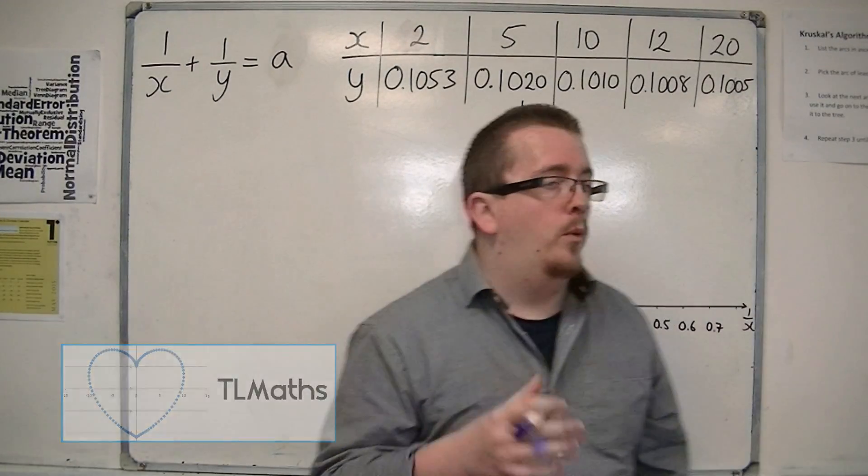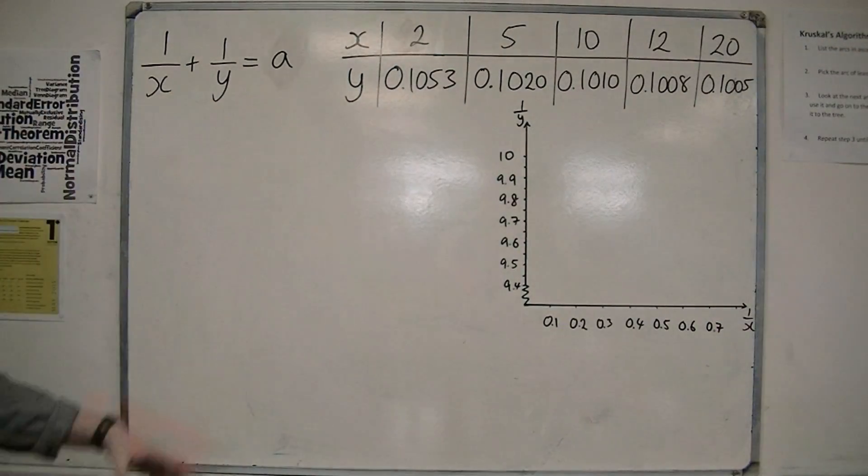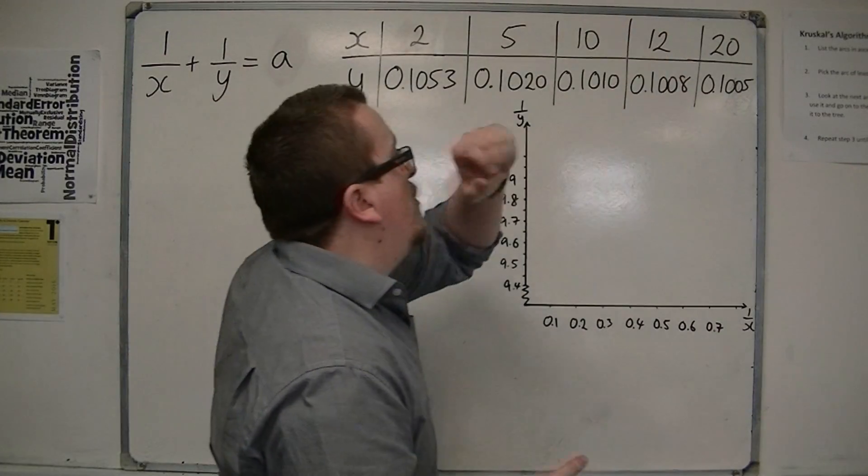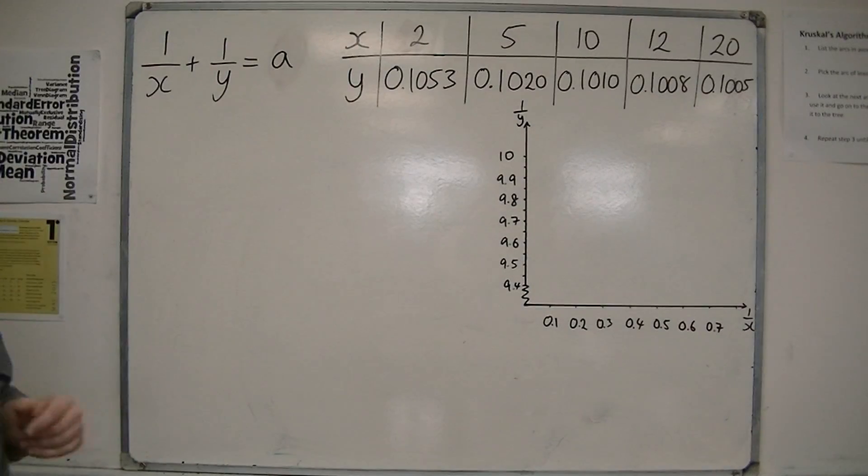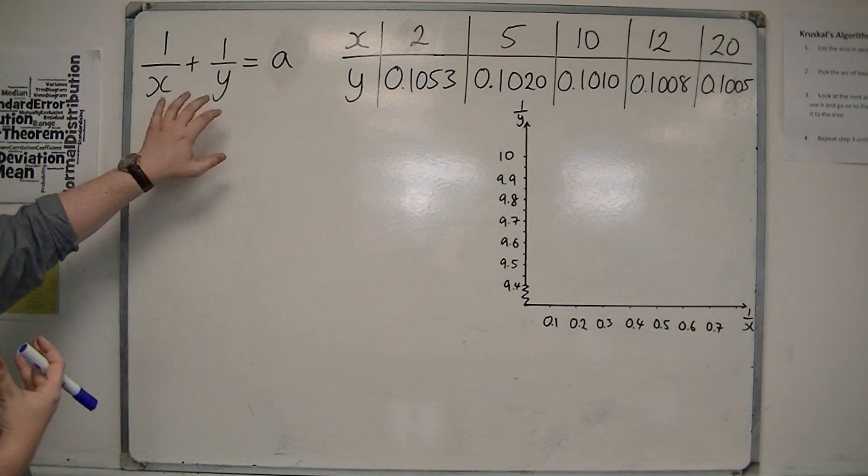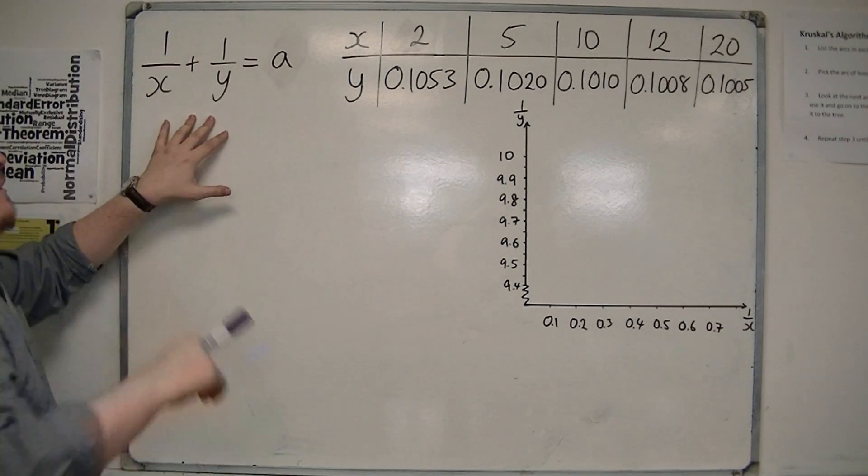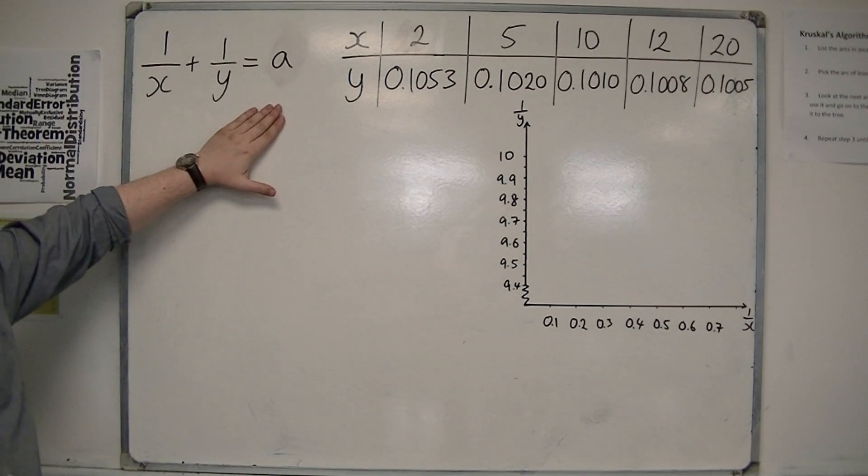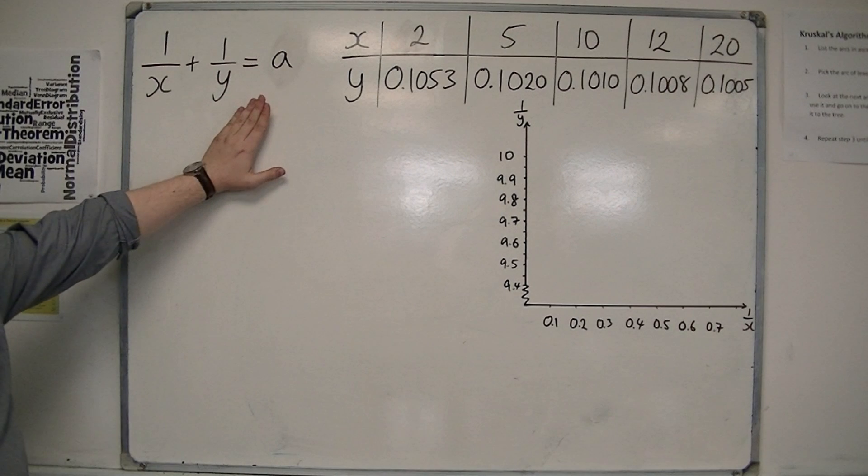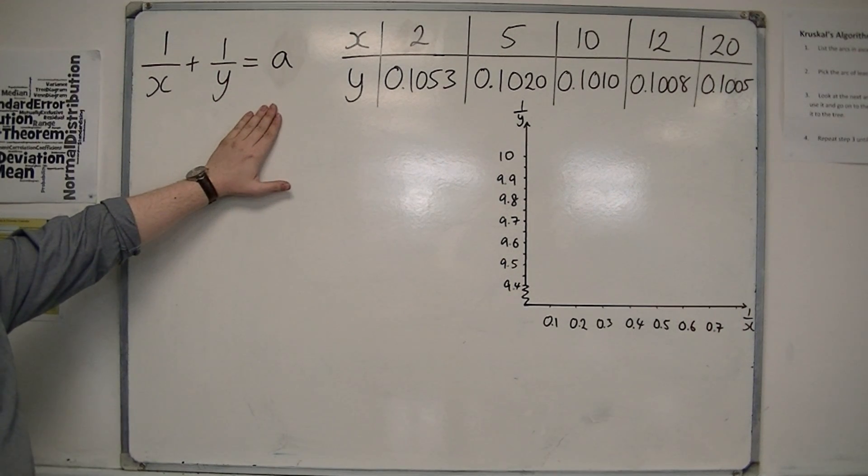Okay, I'm going to show you another example here. Let's say that this is my experimental data, and I think that the data fits a graph that is 1 over x plus 1 over y equals a, and it's the a value that I don't know, and that's the one that I want to estimate here.